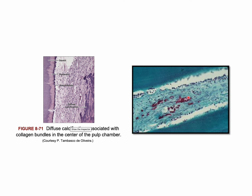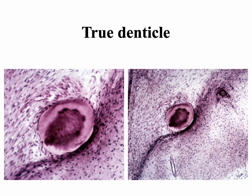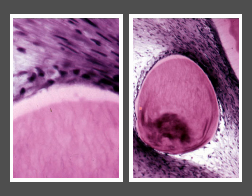You can also see true denticles, which actually look like dentine by having tubular structures. Here is the low magnification view, and this is the higher magnification. This is another true denticle that looks like dentine, with odontoblasts and tubular structures. You can see the predentine area here.